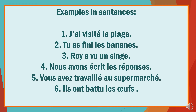Here are some practical examples of the passé composé with avoir in sentences: j'ai visité la plage (I visited the beach), tu as fini les bananes (you finished the bananas), Roy a vu un singe (Roy saw a monkey), nous avons écrit les réponses (we wrote the answers), vous avez travaillé au supermarché (you worked at the supermarket), ils ont battu les œufs (they beat the eggs).